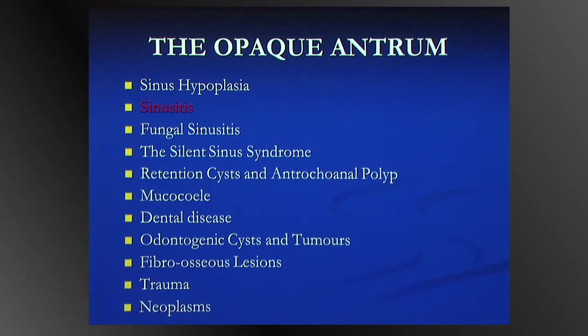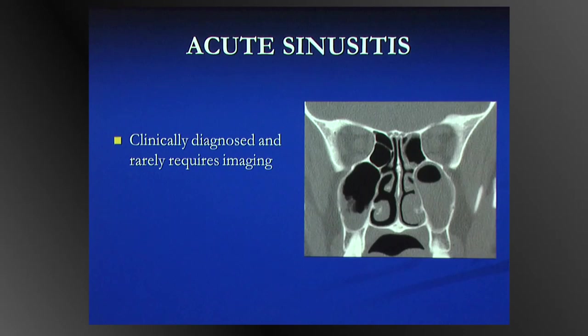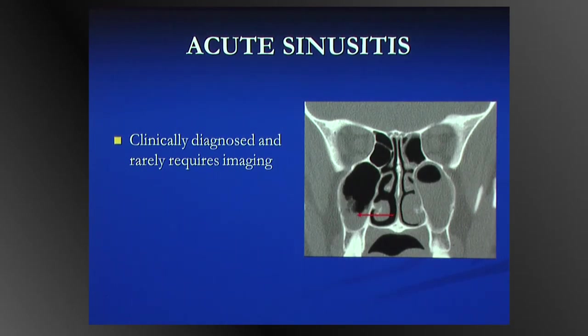Sinusitis: acute sinusitis is a clinical entity and doesn't require imaging. Imaging is usually reserved for when the diagnosis is in doubt or complications are expected. When it is imaged, the hallmark is the air-fluid level — subtotal or total sinus opacification with air-fluid levels. Remember, the air-fluid level is not pathognomonic for sinusitis; you can see it in crying kids and in polyposis, but in the correct setting it alludes to the diagnosis.